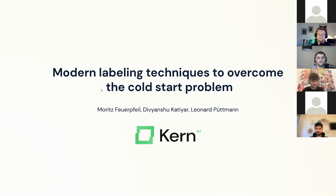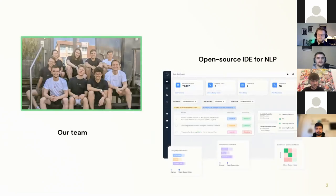Today we're going to talk about modern labeling techniques to overcome the cold start problem. We want to achieve a new perspective on labeling that is not just handed over to crowd labelers who are drastically underpaid, but a little more diverse and rich. On the right side you can see our main product, called Refinery — it is an open-source IDE for NLP.